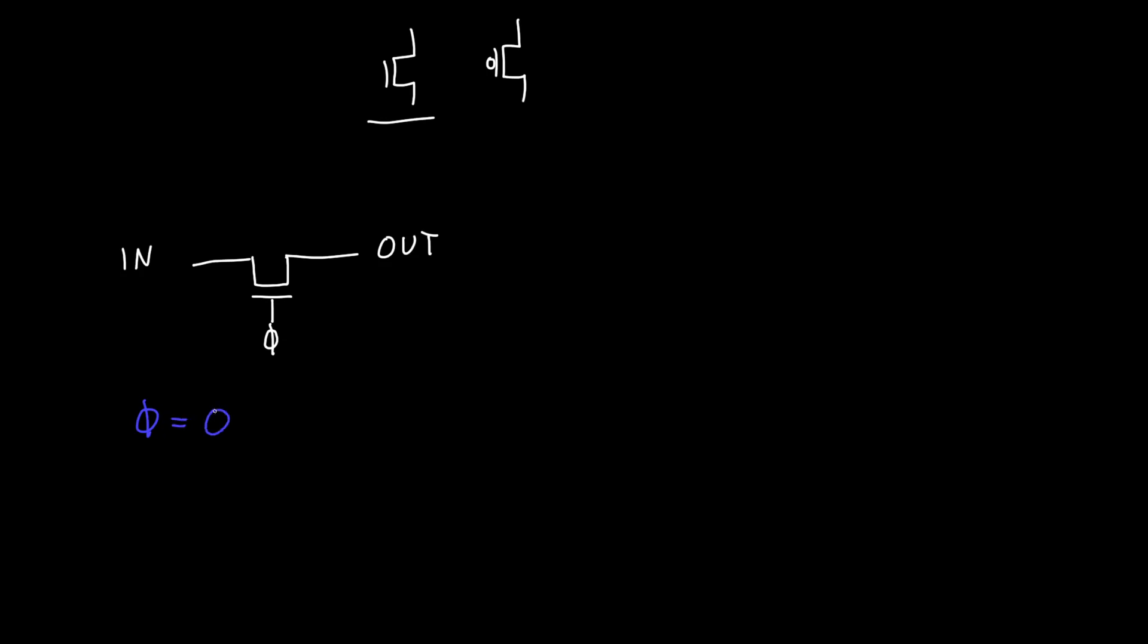And that's just a standard thing to call this control signal to the transmission gate. So what happens when phi is equal to zero volts? Well, in this case, the NMOS is off. The NMOS is off. And so the input is isolated from the output. So this acts just like the switch, the open circuit that we're looking for. And so the output is isolated from the input. And that's great. That seems to be exactly what we want.